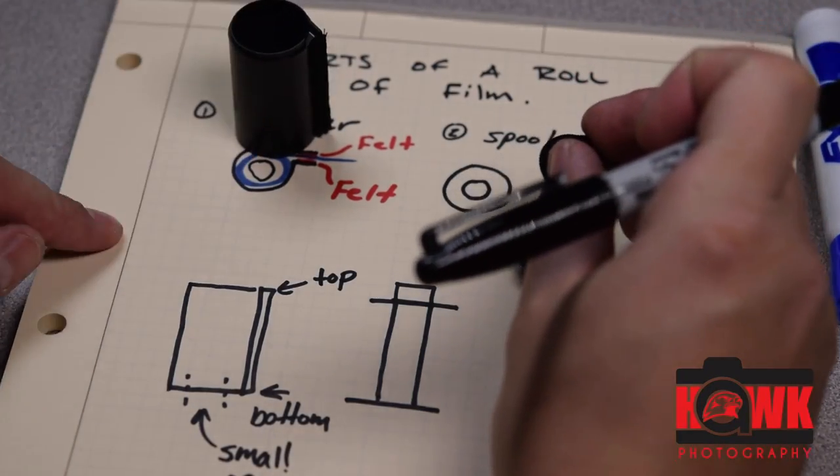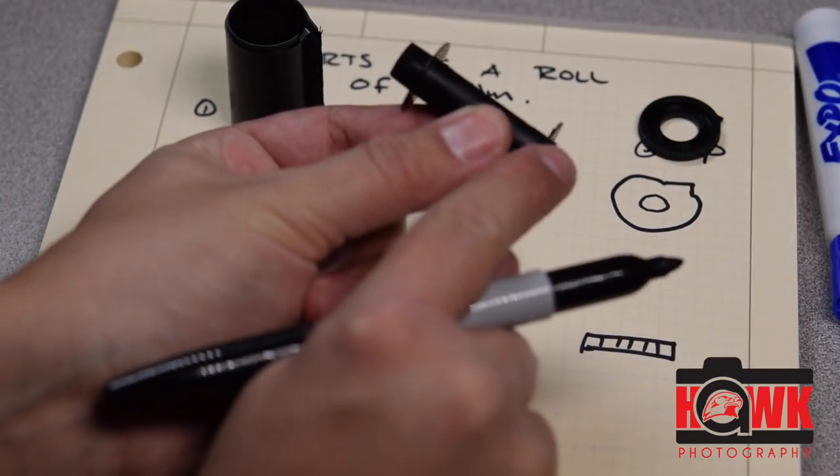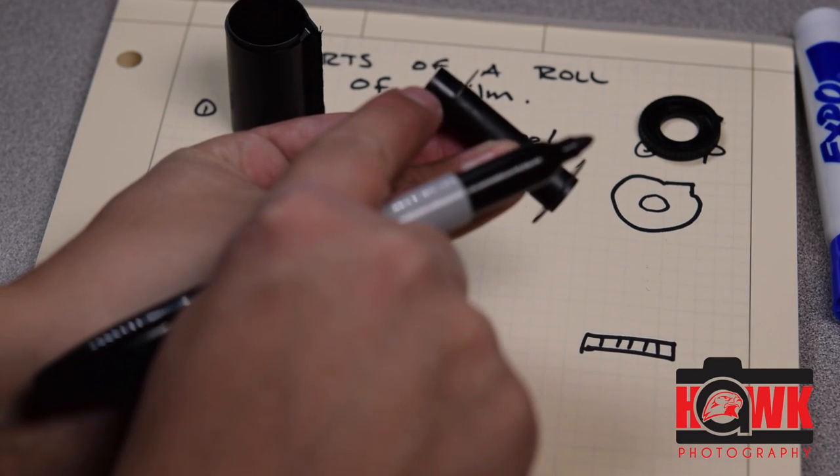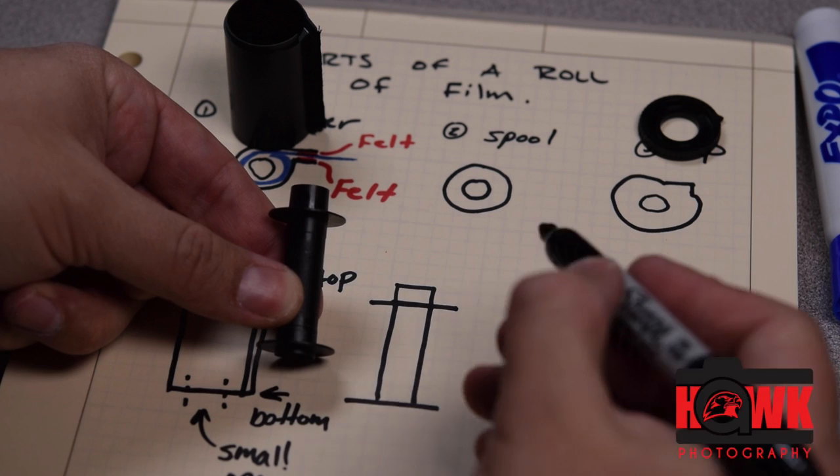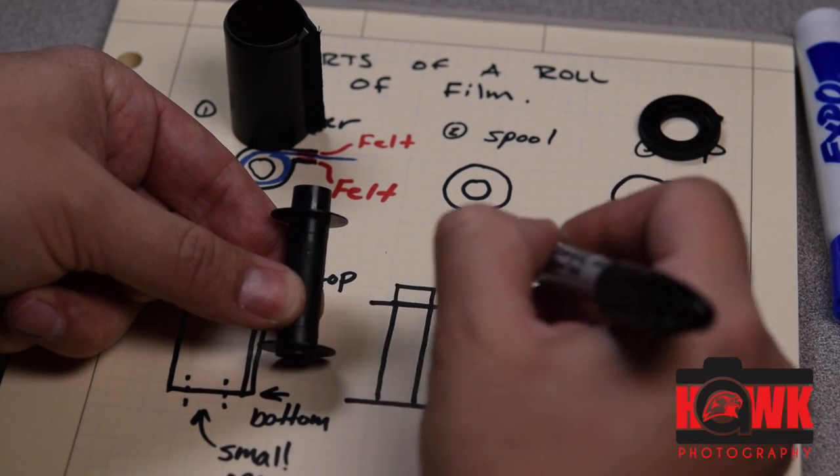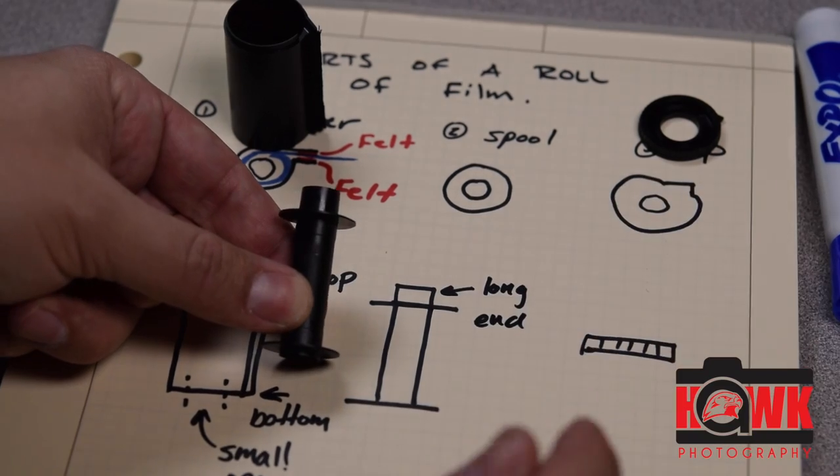Okay, moving from the canister over to the spool side. You're going to see that this thing has a couple little fins here. And it has a longer side. There it is in the side view. And I refer to this as the long end. Technical.